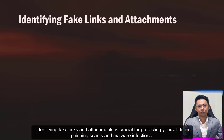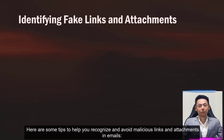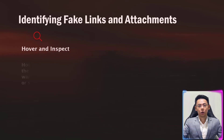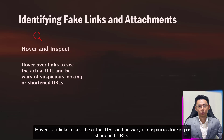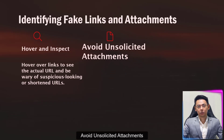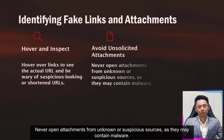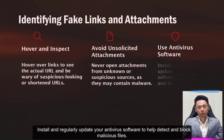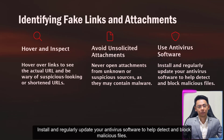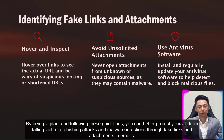Identifying fake links and attachments is crucial for protecting yourself from phishing scams and malware infections. Hover over links to see the actual URL, and be wary of suspicious-looking or shortened URLs. Never open attachments from unknown or suspicious sources, as they may contain malware. Install and regularly update your antivirus software to help detect and block malicious files. By being vigilant and following these guidelines, you can better protect yourself from phishing attacks through fake links and attachments in emails.